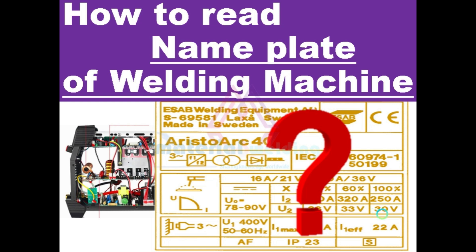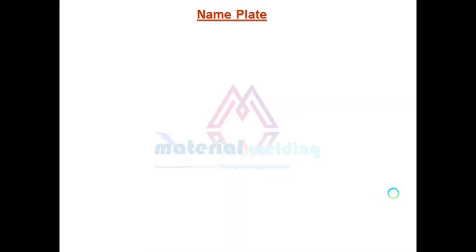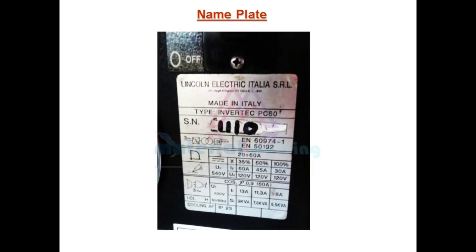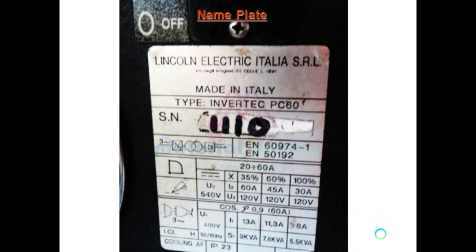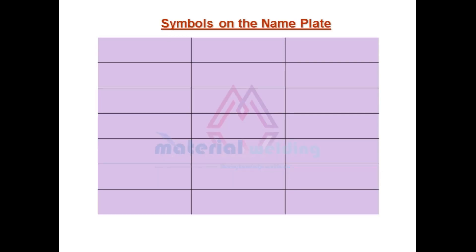The picture shows one nameplate from a welding power source. To understand and interpret a nameplate, we first need to understand the meaning of the symbols on the rating plates. I'm using both words nameplate or rating plate because the meaning is the same.